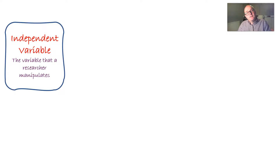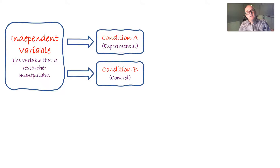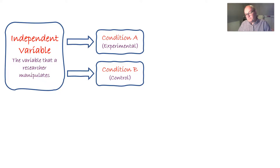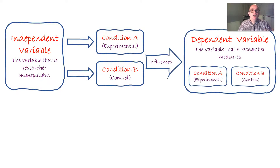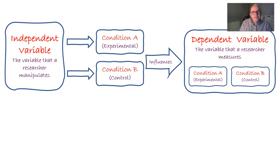So that's operationalization. In most studies, we have an independent variable which we operationalize to make two or more conditions - in my study, eating fish and chips or just chips, but it could be males and females, or young and old. We then measure something to see whether the independent variable has had an effect, and that measurement is called the dependent variable. That's what we want to do in psychological research.